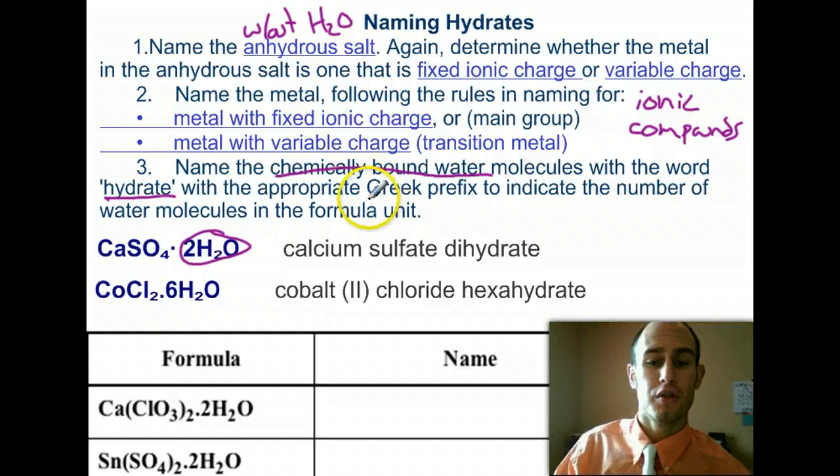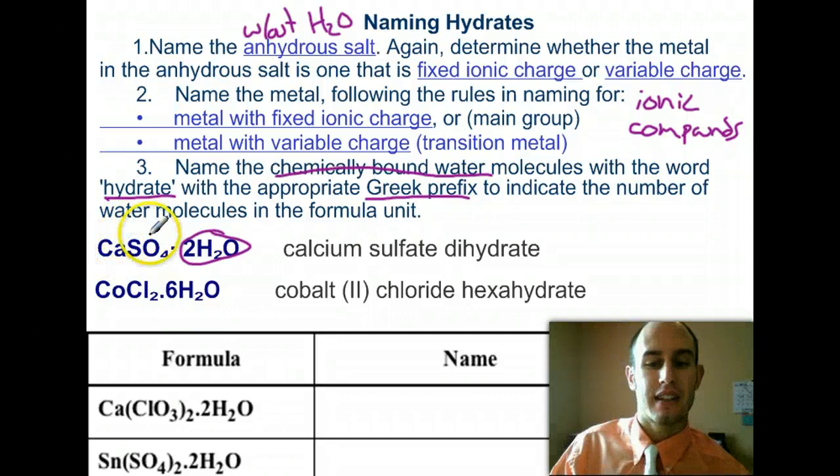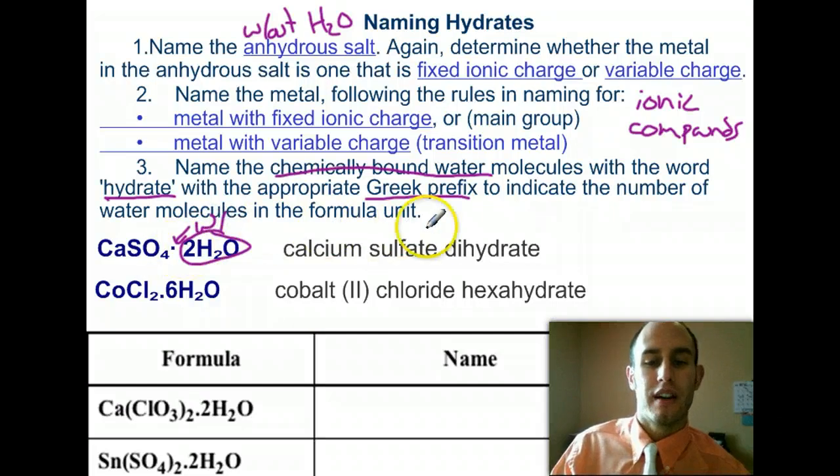You also need to know your Greek prefixes, which we just covered in naming binary molecular compounds. The only thing that's different here is you're going to name your salt the exact same way, calcium sulfate, but you're going to put this little dot here. Basically, what that dot means is with. So, with, in our example here, dihydrate, two waters.